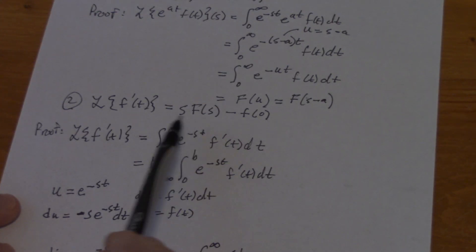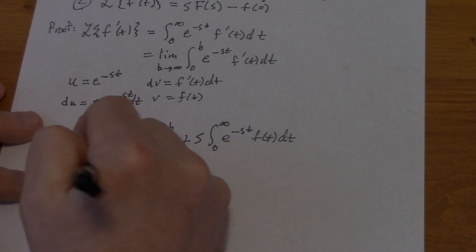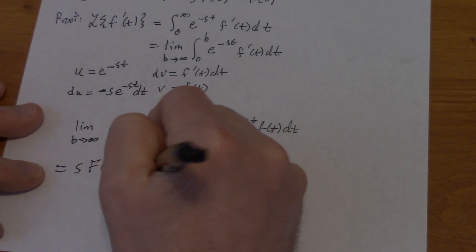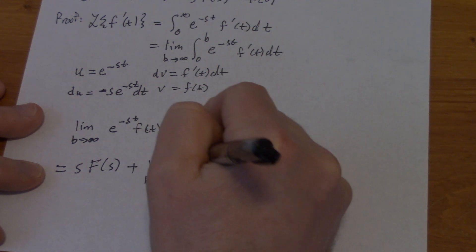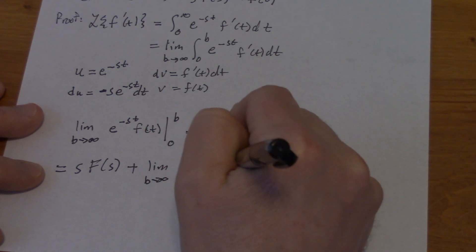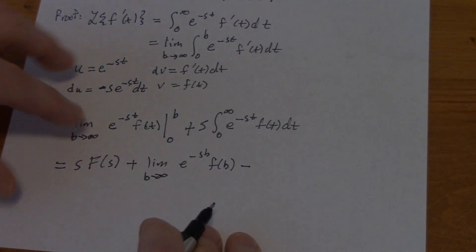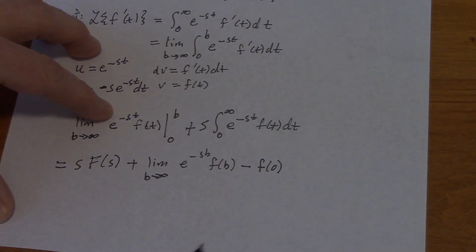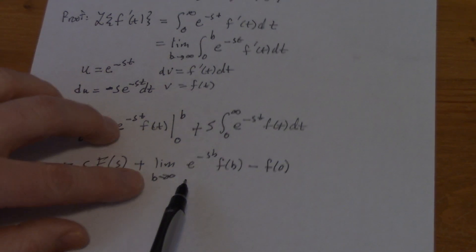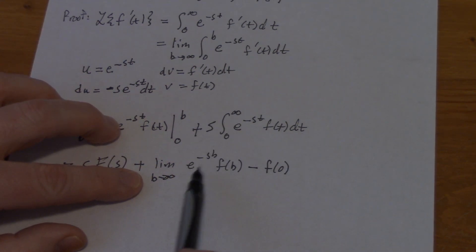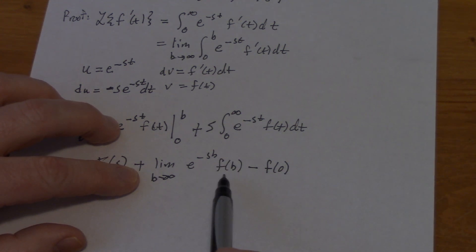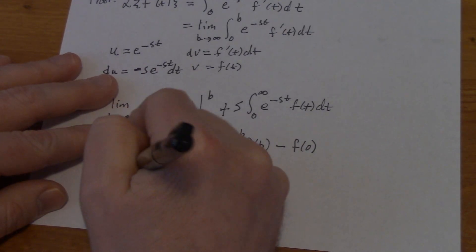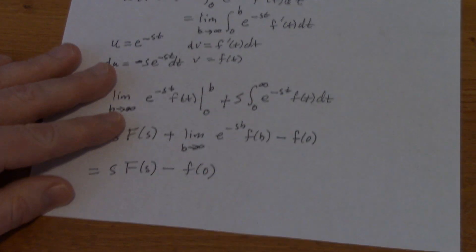I've got that term I knew I was going to end up with. Then plus the limit as b goes to infinity of e to the minus sb times f of b. When I plug in zero, that's going to be one, and that's just f of zero. As before, the reason we pair off the exponential function with these things — that's why the definition is the way it is — that limit is always going to be zero, because whatever I'm looking at here is not more powerful than an exponential function. So my final answer is s F of s minus f of zero, and there we have it.